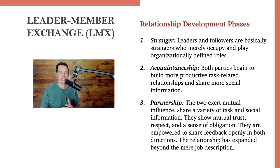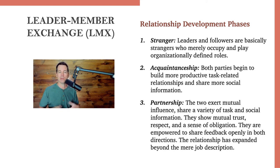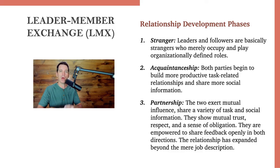The third level, all the way up on the high-quality relationship scale, is partnership. That's where the two parties exert mutual influence, share a variety of tasks and social information, show mutual trust, respect, and a sense of obligation toward each other. They are both empowered to share feedback openly in both directions, and their relationship has expanded beyond the mere job description — it's a well-rounded, high-quality relationship with lots of back and forth.